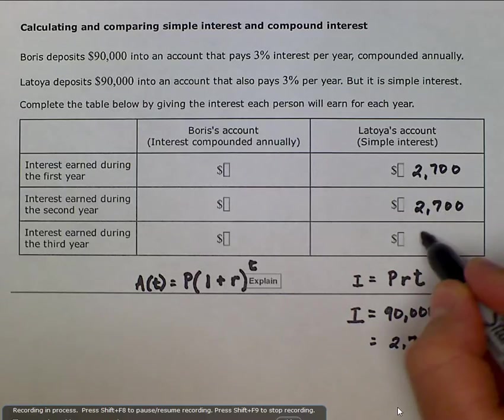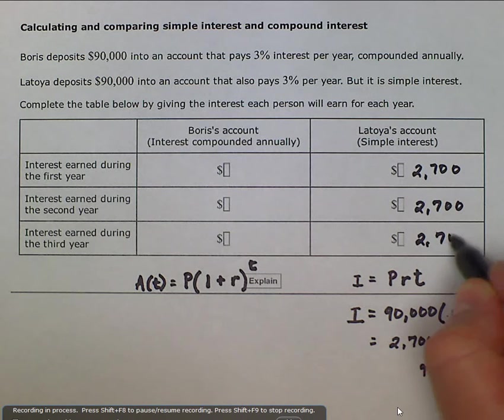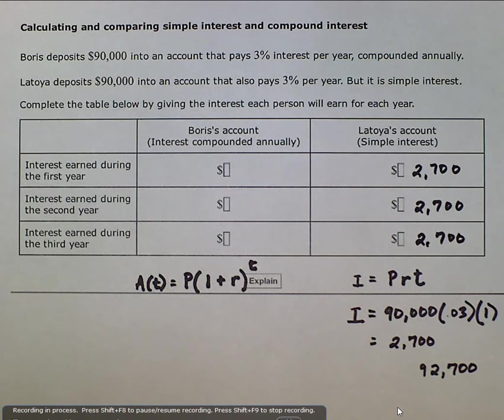Let's look at how it changes when we consider compounding. Compounding means that you do take into consideration the new amount. So after the first year, the interest should be the same.